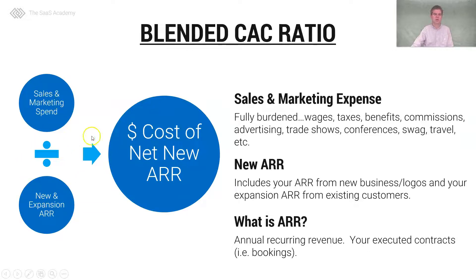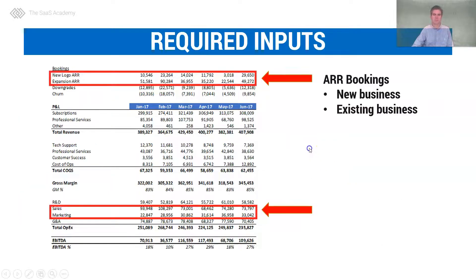In the denominator we have all new and expansion ARR coming into the business. You divide the sales and marketing expense by that ARR, and that equals the cost of new ARR. New ARR means all ARR from new logos coming into the business, and expansion ARR comes from existing customers.